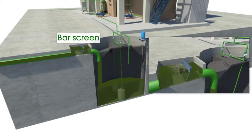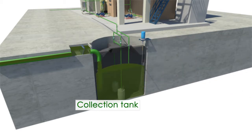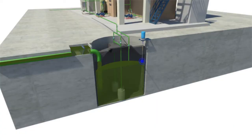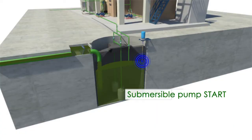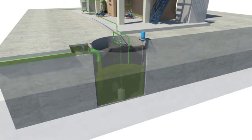The wastewater passes through a bar screen to remove oversized impurities, and it then gets collected in the collection tank. The collection tank is equipped with a level sensor to detect the presence of effluent in the tank and to monitor the height of wastewater.